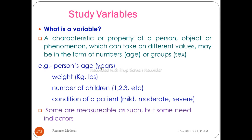For example, if a person's age is measured, it is in years. Weight is in kilograms. Number of children, and the condition of a patient — mild, or moderate. So this is what a variable is. Some are measurable as such, but some are not measurable.